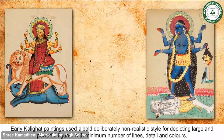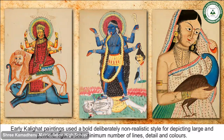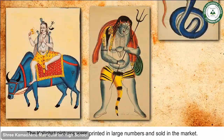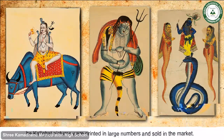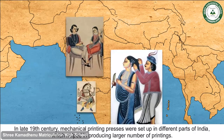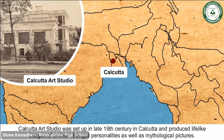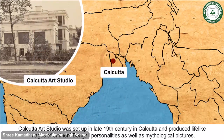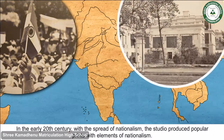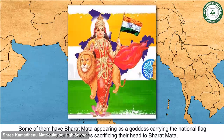Early Kalighat paintings used a bold, deliberately non-realistic style for depicting large and powerful figures with a minimum number of lines, detail, and colours. Kalighat pictures were printed in large numbers and sold in the market. In the late 19th century, mechanical printing presses were set up across India. The Calcutta Art Studio, set up in the late 19th century, produced lifelike images of eminent Bengali personalities as well as mythological pictures. In the early 20th century, with the spread of nationalism, it produced prints featuring Bharat Mata as a goddess carrying the national flag, or nationalist heroes sacrificing themselves to Bharat Mata.